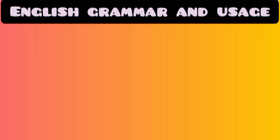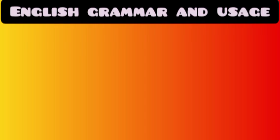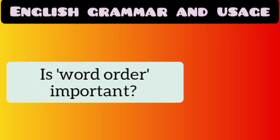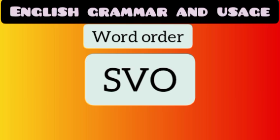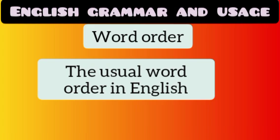English grammar and usage — today let's discuss another module in the paper English grammar and usage. Do you know why word order is important in English? Word order is important because it can change the meaning or fluency of a sentence. Basically, English is considered an SVO language — subject, verb, object. Let's discuss the usual word order in English sentences.